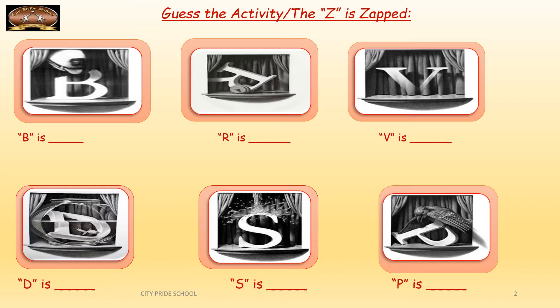So now you have guessed it. It is 'R is reversed' — if you see, R is reversed. V here is veiled — there is a veil, like curtains, trying to cover V, so V is veiled. D is drowned — it is drowned in this fish pond if you see. S is soaked — there is water splashing on S, so of course it is soaked. And P is pecked — a bird is pecking P, so P is pecked. This activity helps you to enhance your vocabulary when it comes to verbs.